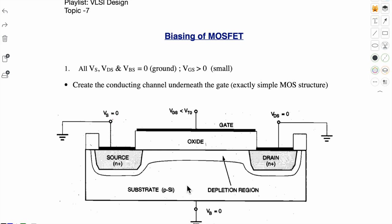Since bulk is P type, with influence of this small positive voltage the holes from this region move towards the bulk. They will leave behind immobile acceptor ions.